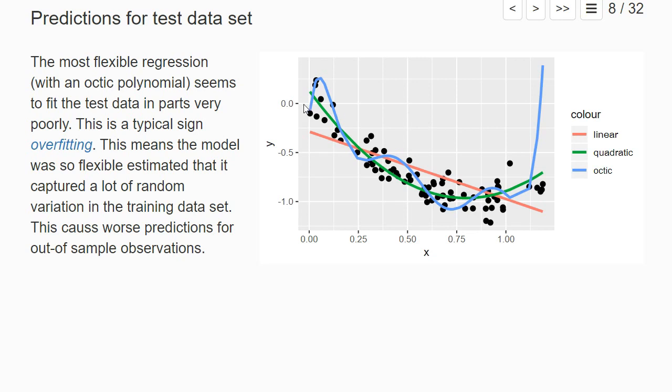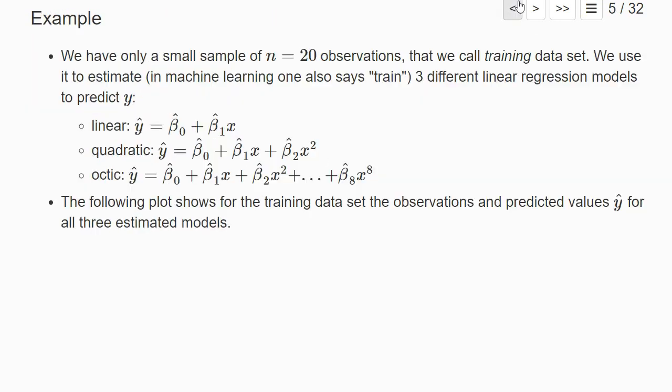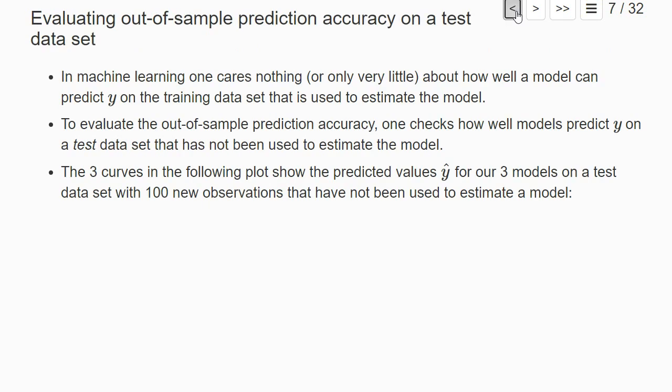The graph shows the results for our test data set. The black dots are new observations that we have not used to estimate the coefficients of our three curves, but we still can